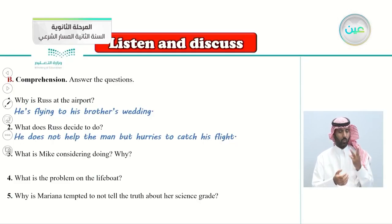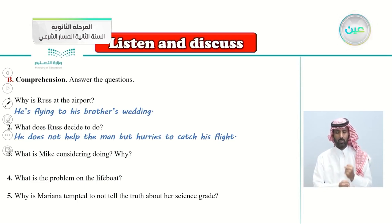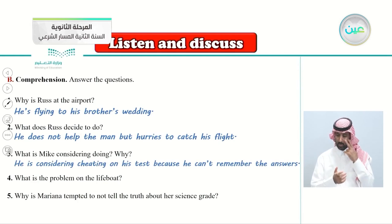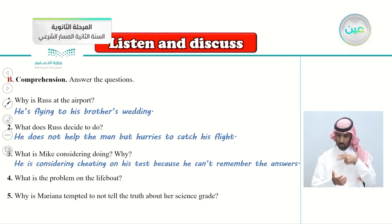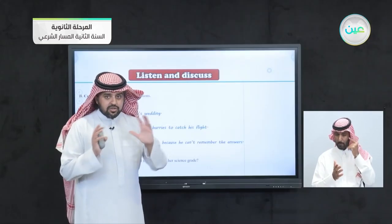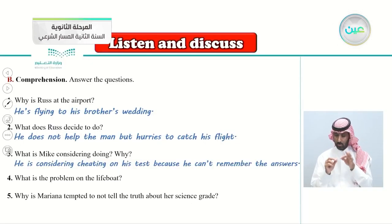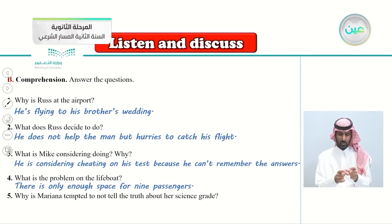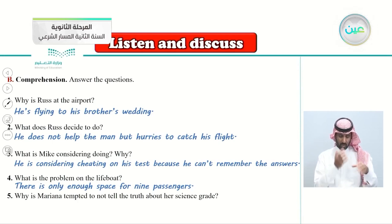What is Mike considering doing and why? He is considering cheating on his test because he can't remember the answers — even though it's immoral and unethical. He was confused and that's why he chose to cheat. What is the problem on the lifeboat? There's only enough space for nine passengers, so there is not enough room for all ten — making this a really huge dilemma.